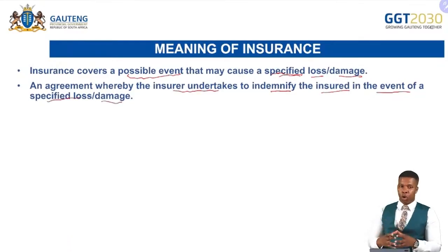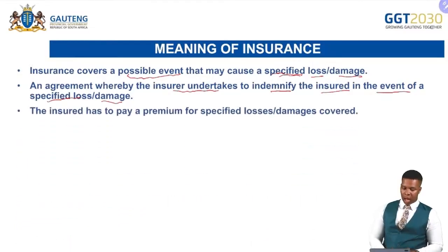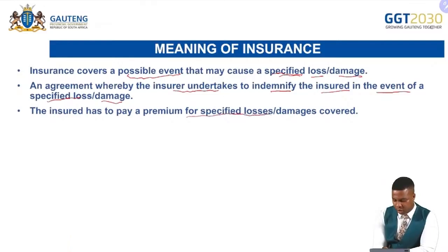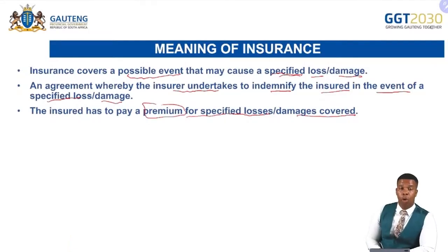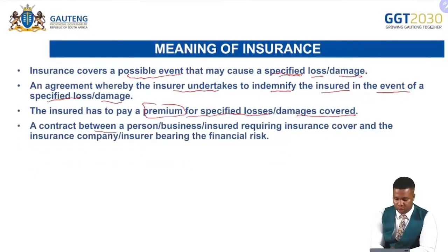The loss has to be specified — is it theft, hijacking, or a car accident? Those are your specified losses. The insured has to pay a premium for the specified losses or damages covered. A premium is a way in which the insured confirms they are being covered for the following specified losses, paid on a monthly basis. This is a contract between a person or business requiring insurance cover and the insurance company bearing the financial risk.